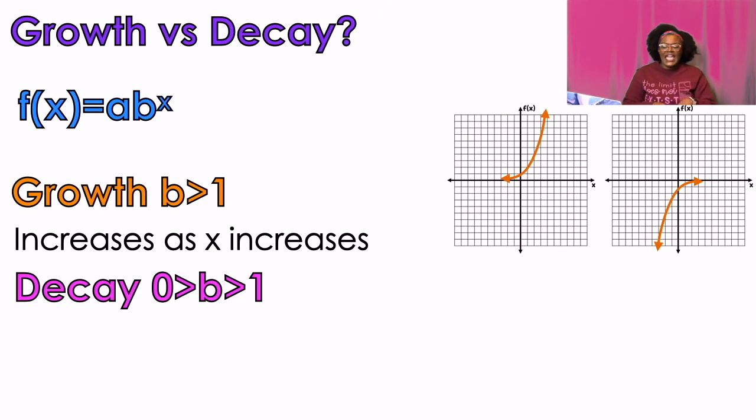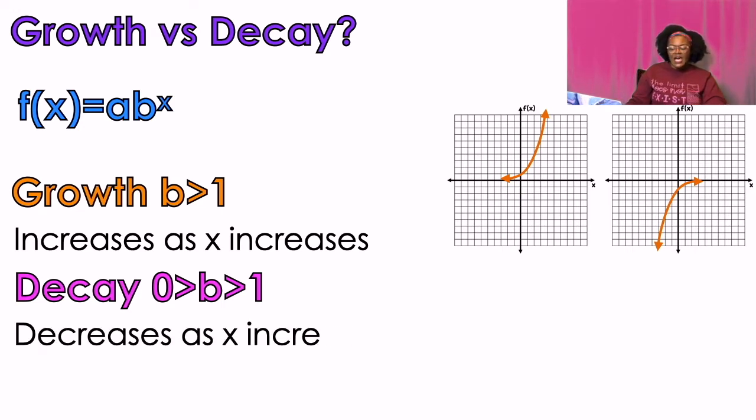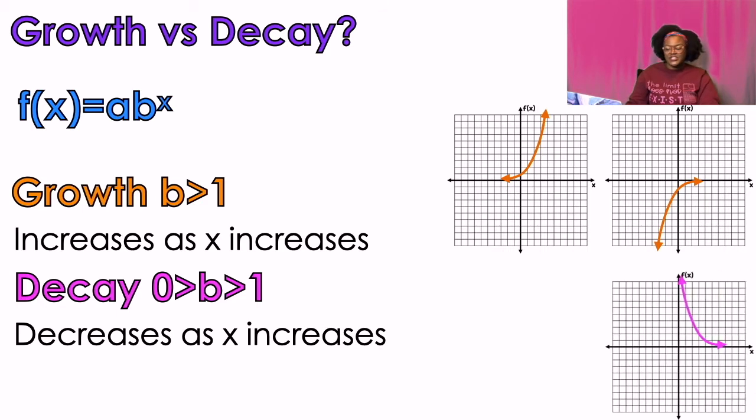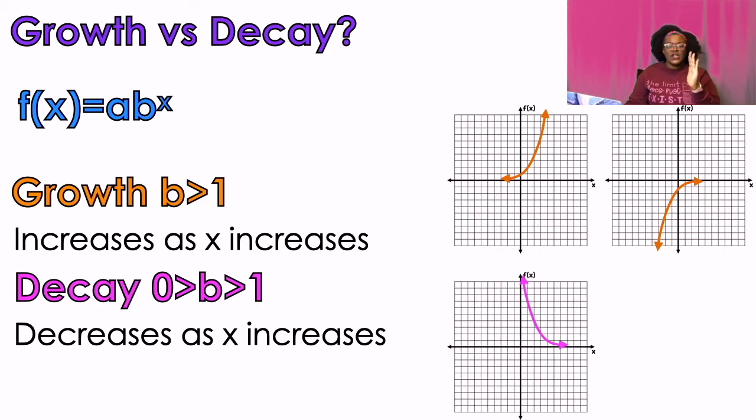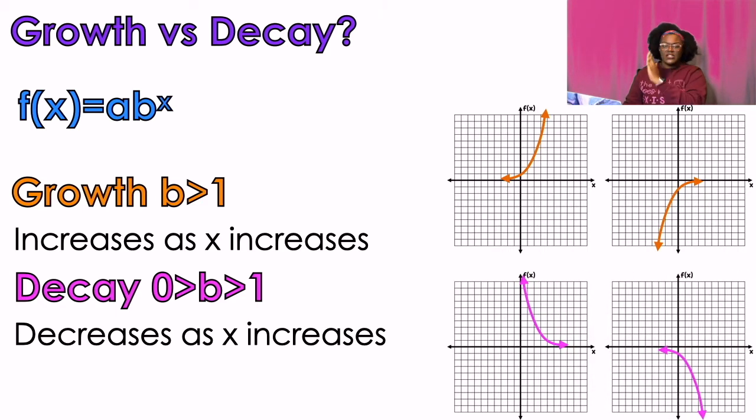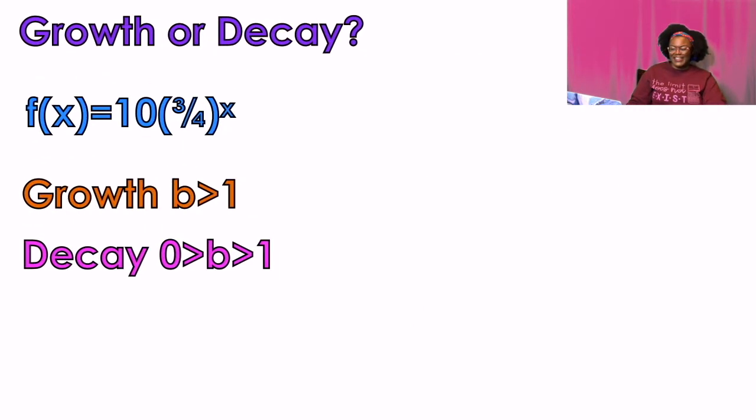Decay. Decay has to be, the B value has to be between zero and one. And that means that it decreases as x increases. So from left to right, it's going down. I don't know if this is left to right, or if it's going to be right to left, we'll see when I put the video up.